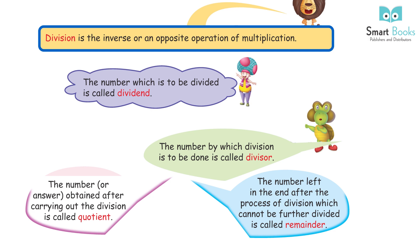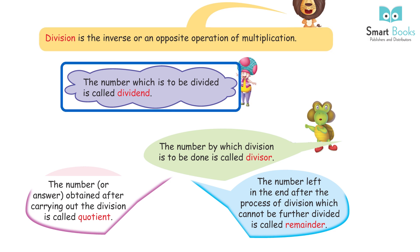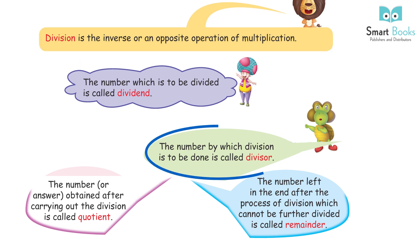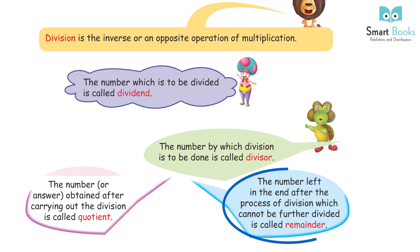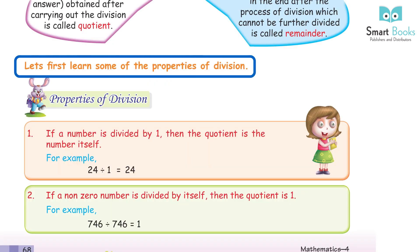Division is the inverse or opposite operation of multiplication. The number which is to be divided is called the dividend. The number by which division is to be done is called the divisor. The answer obtained after carrying out the division is called the quotient. The number left at the end after the process of division which cannot be further divided is called the remainder.